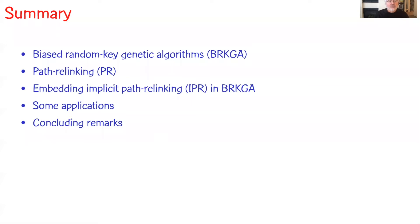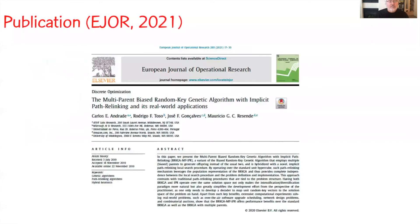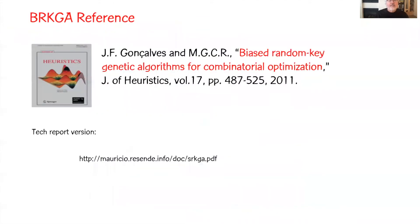Here's a summary of the talk. I begin by briefly going over bias random key genetic algorithms and path-through linking, and then show how to embed path-through linking within a bias random key genetic algorithm — what we call an implicit path-through linking. We give some applications and make some concluding remarks. The topic of this talk is covered in a paper published earlier this year in EGR. A good reference for bias random key genetic algorithms is a tutorial I wrote with José Gonçalves published in Journal of Heuristics about 10 years ago. A tech report version can be downloaded from my personal website.